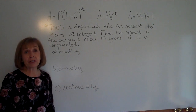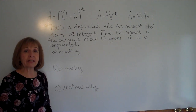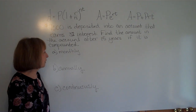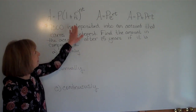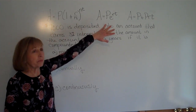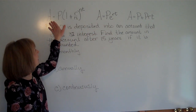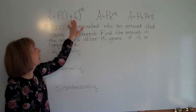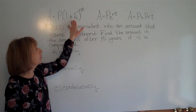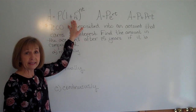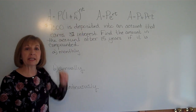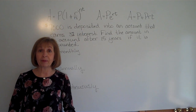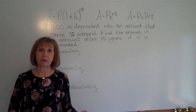There are several different interest formulas to choose from. The first is A equals P times the quantity 1 plus R over N, raised to the NT power. This is the compound interest formula when you have a specific number of compounding periods per year.